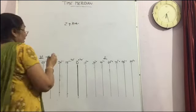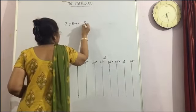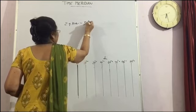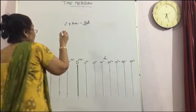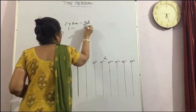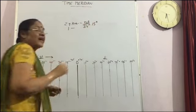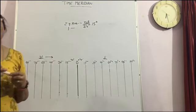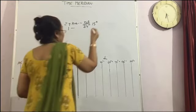And in 1 hour, so 360 degree complete in 24 hours. Then in 1 hour upon 24, 15 degree. It means the 15 degree we cover in 1 hour.